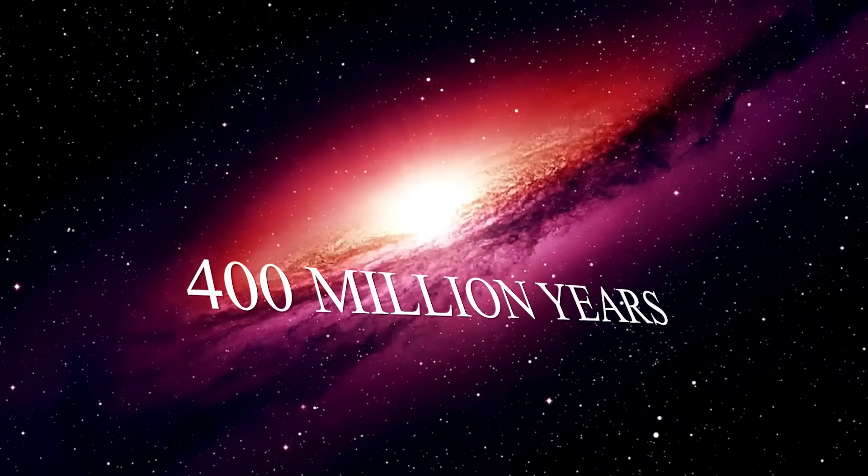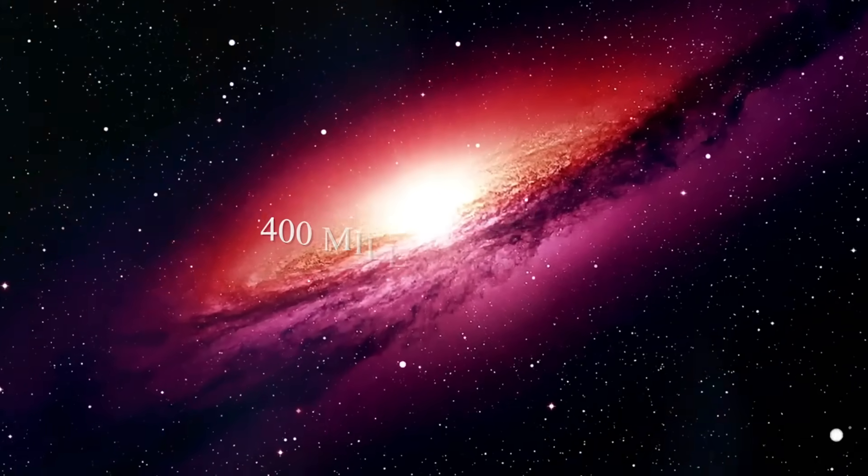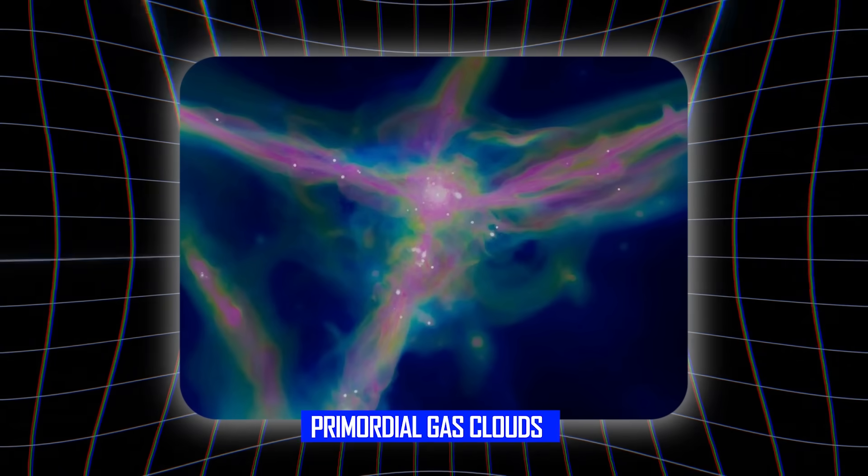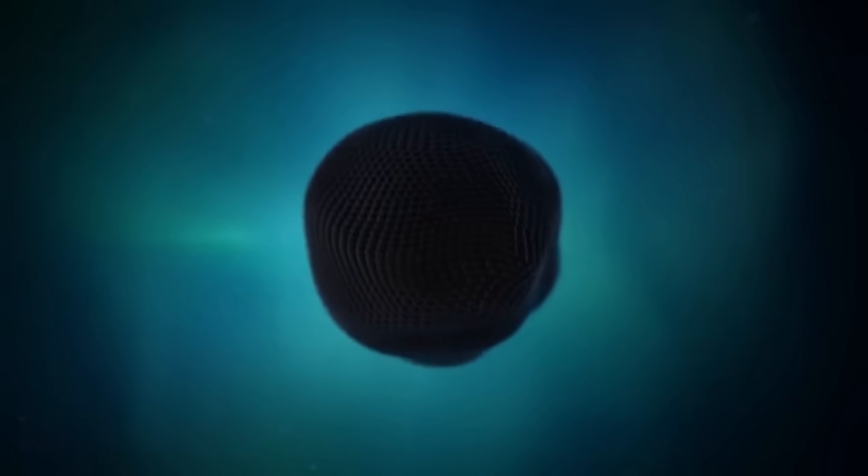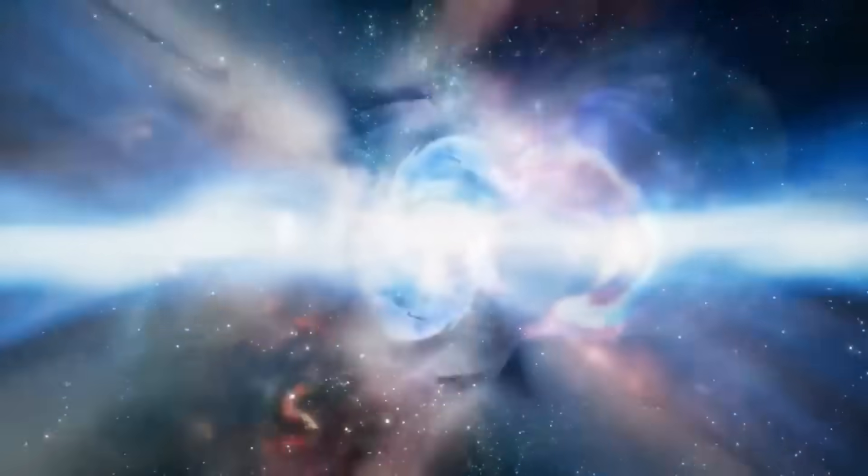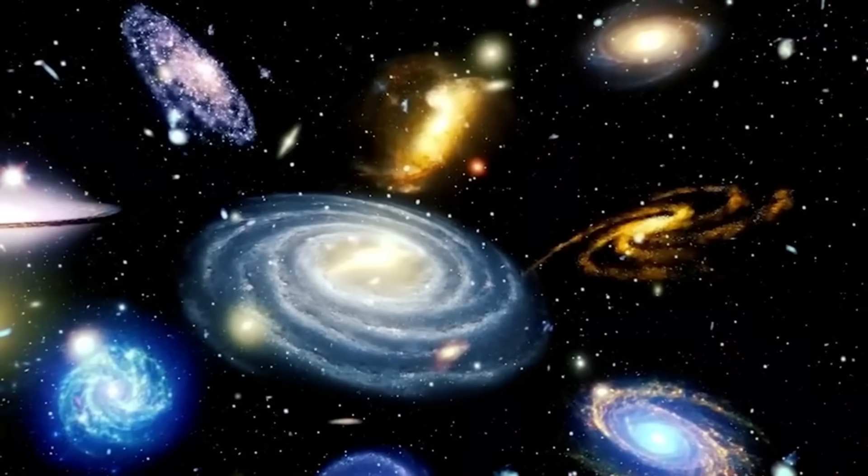It had only about 400 million years to form something like a billion solar masses of stars. We just do not know how to make that happen. Some cosmologists now theorize that primordial gas clouds may have skipped star formation entirely, collapsing straight into black holes. This direct collapse theory would explain how such massive objects formed so quickly, but it requires us to completely rethink the universe's first chapters.